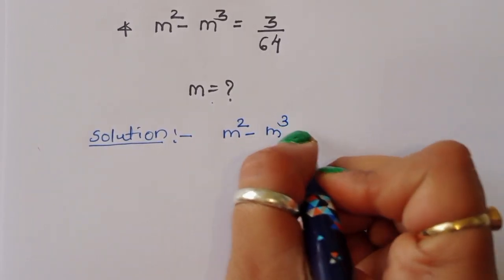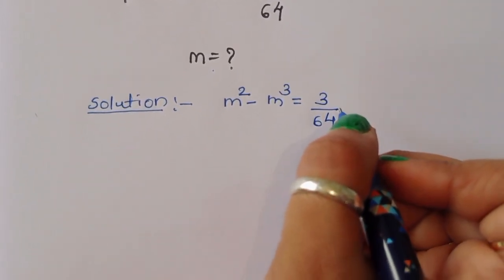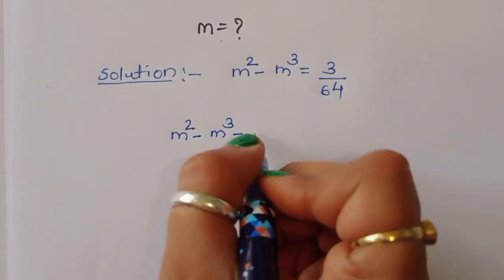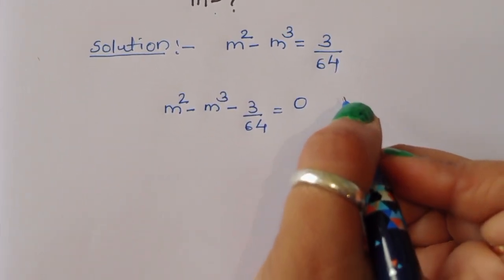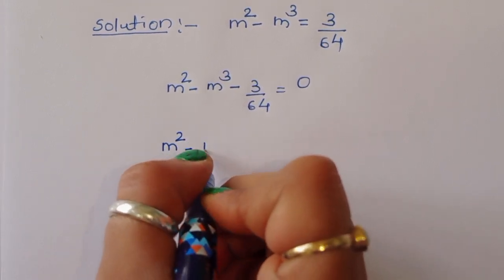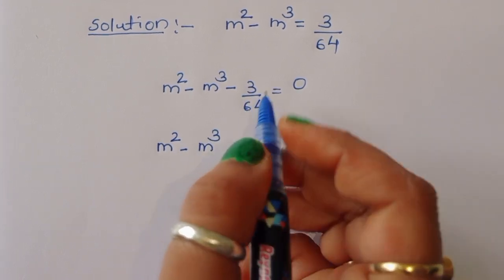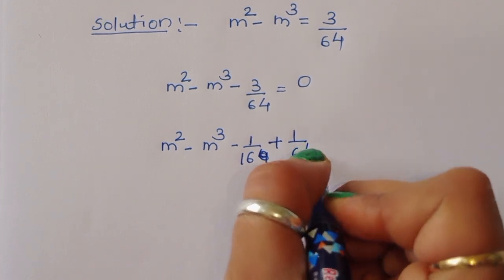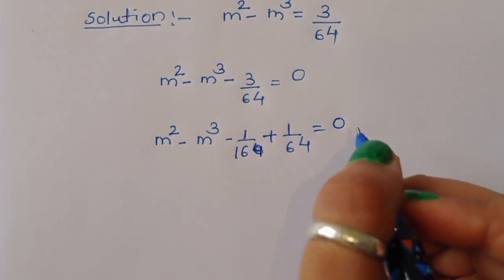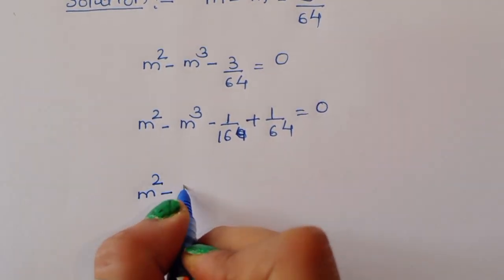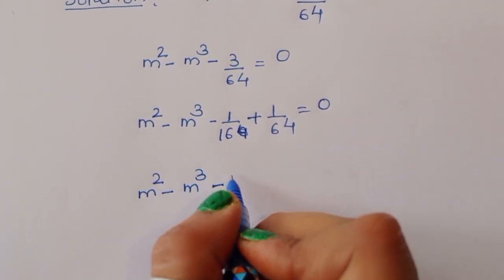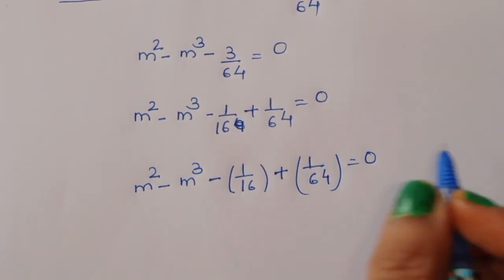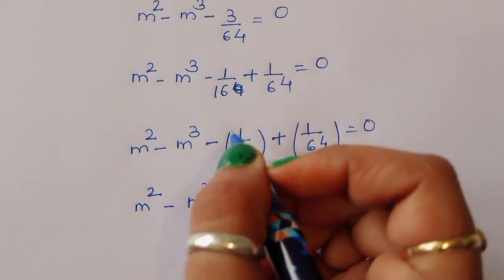m squared minus m cubed is equal to 3 upon 64. Now we can write this as m squared minus m cubed minus 3 upon 64 is equal to 0. Now this 3 upon 64 we can split as 1 upon 16 minus 1 upon 64, so: m squared minus m cubed minus 1 upon 16 plus 1 upon 64 is equal to 0.